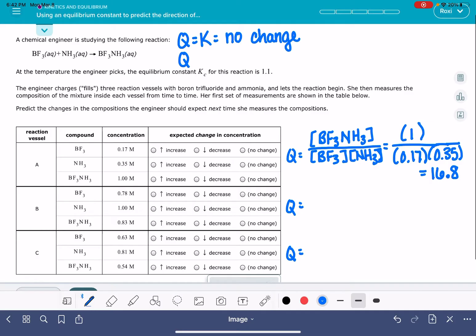In this case, our Q is not equal to K. Our Q is much bigger than K. So if Q is bigger than K, that means that our reaction is too far to the right. We have too much product. So that means that our products need to decrease, and the reactants need to increase.